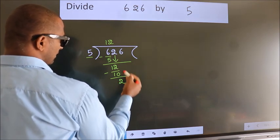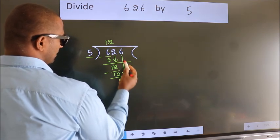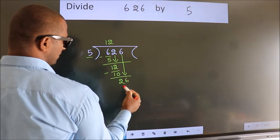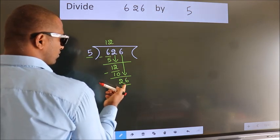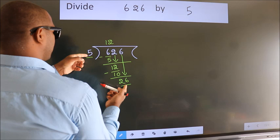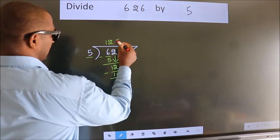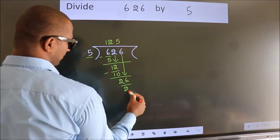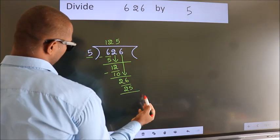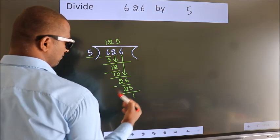After this, bring down the beside number. So, 6 down. So, 26. A number close to 26 in 5 table is 5 fives 25. Now, we subtract. We get 1.